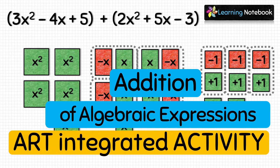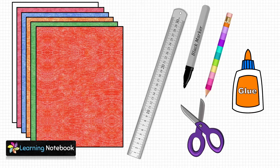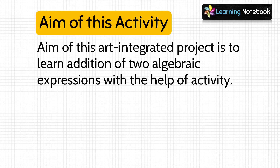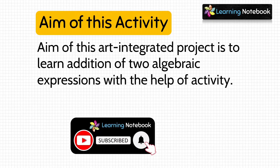We have many more such maths art integrated activities, projects, and working models on our channel Learning Notebook. You can find the list of all of them on our website — the link is below in the description box. For this activity, we need a few colorful thick sheets, a ruler, a black marker pen, a pencil, a pair of scissors, and a bottle of glue. The aim of this art integrated project is to learn addition of two algebraic expressions with the help of an activity.